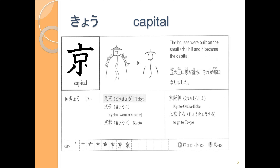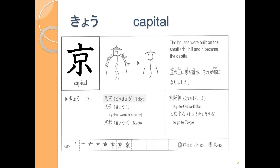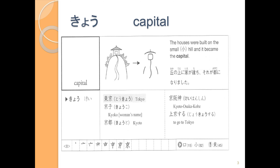This is the きょう from とうきょう; it's also the きょう in きょうと. Let's write the strokes: 1, 2, 3, 4, 5, 6, 7, 8. One more time: 1, 2, 3, 4, 5, 6, 7, 8. And again: 1, 2, 3, 4, 5, 6, 7, 8. This is the きょう in とうきょう and the きょう in きょうと.